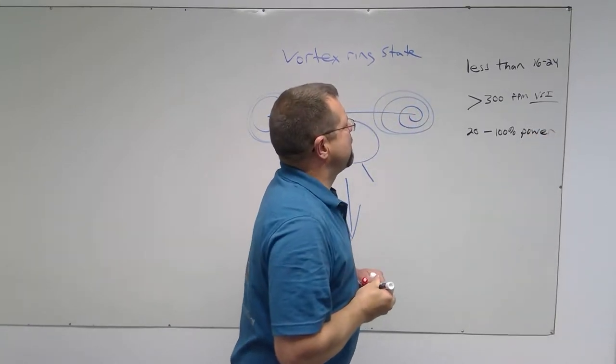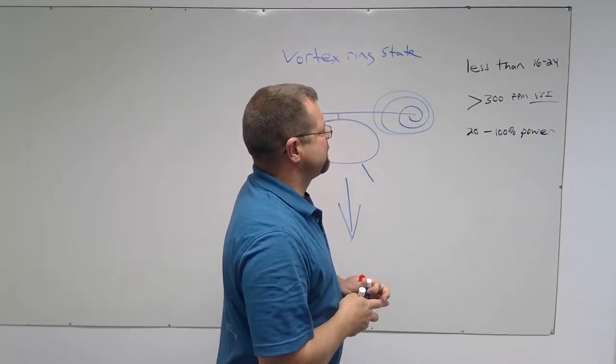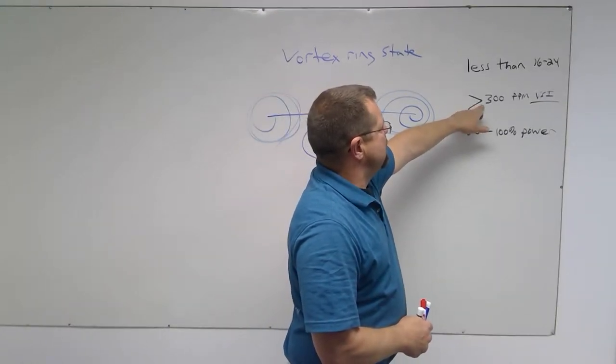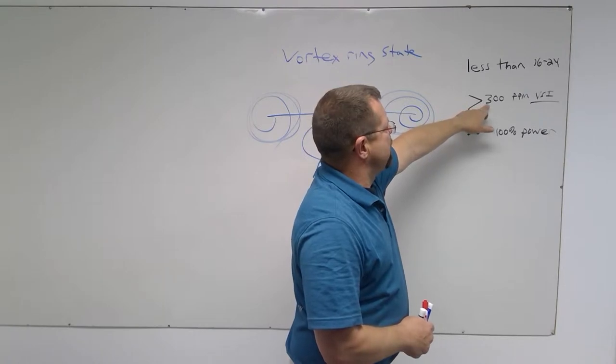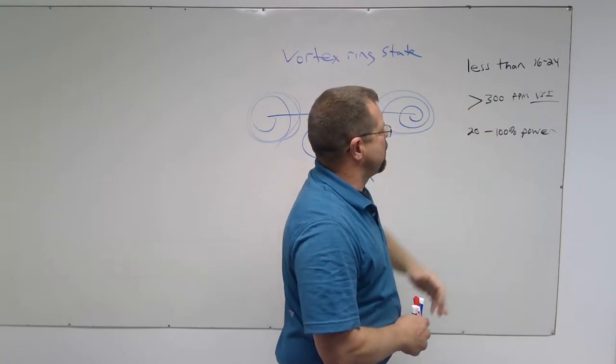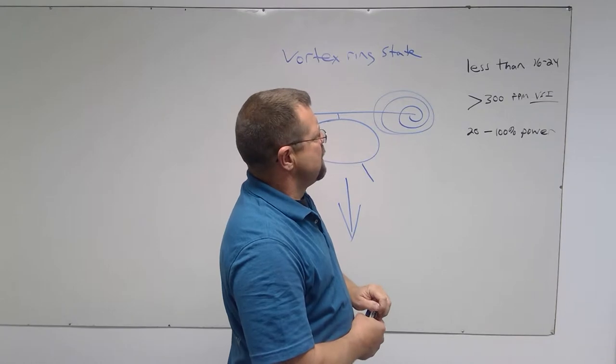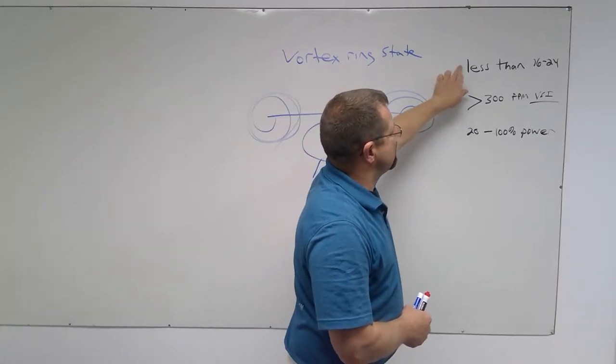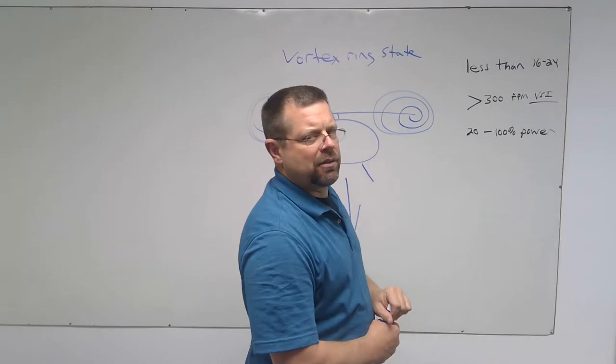20 to 100 percent power. So if you're traveling less than ETL with a descent rate greater than 300 feet per minute and you're using 20 to 100 percent of the power, then you can get into settling with power. If you take away any one of these three, you cannot get into settling with power.